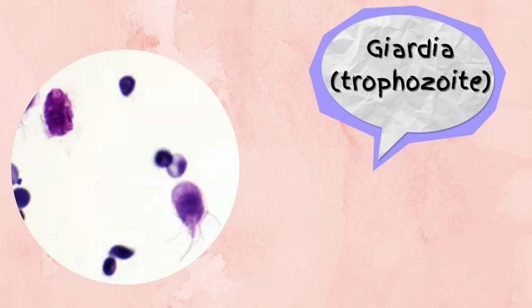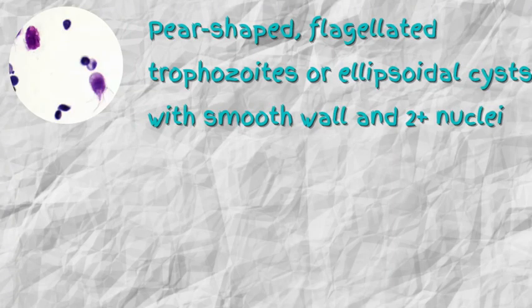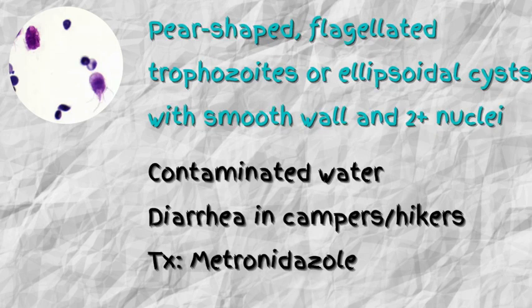What do you remember about Giardia? What are its characteristics? How does it present? Giardia is typically classified as pear-shaped flagellated trophozoites or ellipsoidal cysts with smooth walls and more than two nuclei. You can get Giardia by consuming contaminated water and patients typically present with diarrhea. If a patient is a camper or hiker presenting with diarrhea, think about a Giardia infection. It can be treated with metronidazole.